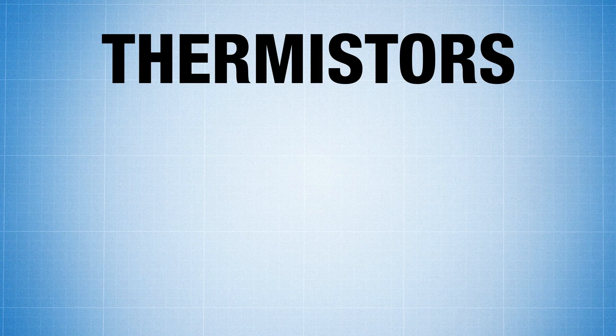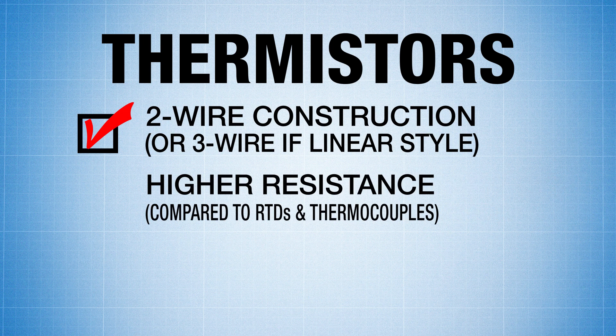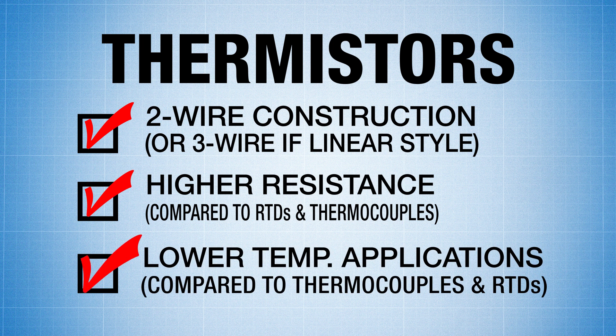Finally, thermistors. They usually come in a two-wire construction unless they're linear where they'll have three wires. They have a higher resistance compared to RTDs and thermocouples and are generally used in lower temperature applications compared to thermocouples and RTDs.